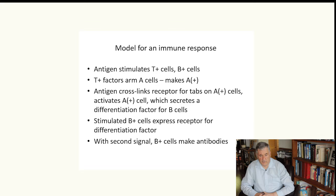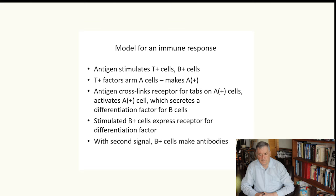In our model for the immune response, to reiterate, the antigen stimulates T plus cells and B plus cells. The tab plus factors A cells makes A plus. Antigen cross links the receptor for the tabs on the A plus cells. That activates the A plus cells, which secrete a differentiation factor for B cells. And with the second signal, B cells make antibodies.